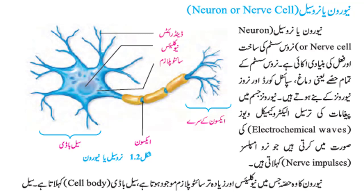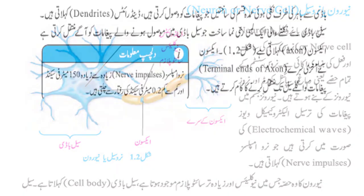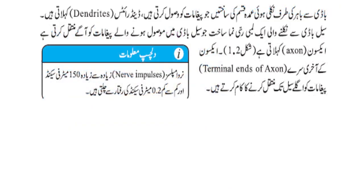Neuron کا وہ حصہ جس میں nucleus اور زیادہ تر cytoplasm موجود ہوتا ہے، cell body کہلاتا ہے۔ Cell body سے باہر کی طرف نکلی ہوئی شاخ نما ساختیں جو پیغامات کو وصول کرتی ہیں، dendrites کہلاتی ہیں۔ Cell body سے نکلنے والی ایک لمبی رسی نما ساخت جو cell body میں محصول ہونے والے پیغامات کو آگے منتقل کرتی ہے، axon کہلاتی ہے۔ Axon کے آخری سرے — terminal ends of axon — پیغامات کو اگلے سیل تک منتقل کرنے کا کام کرتے ہیں۔